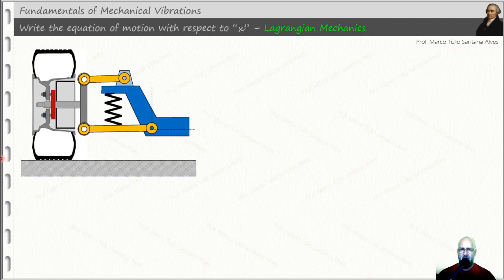So that is a quarter car suspension working here. This part in blue moves up and down, and we are considering here the set composed by the tire plus wheel assumed as rigid.